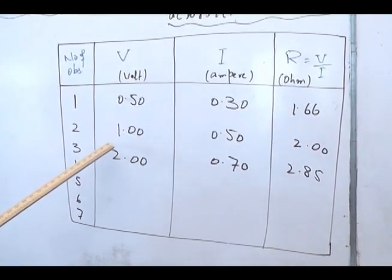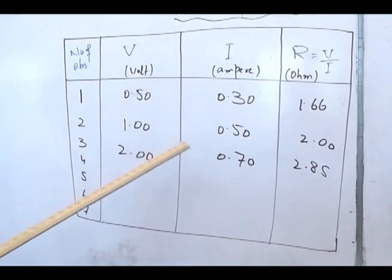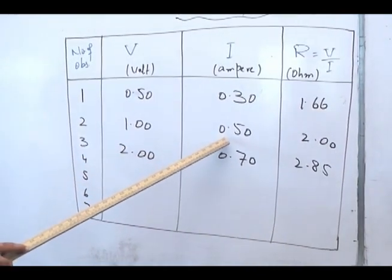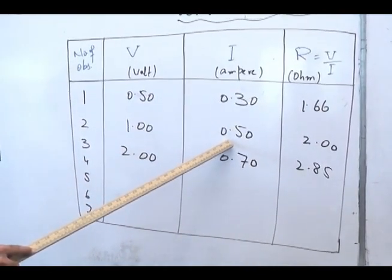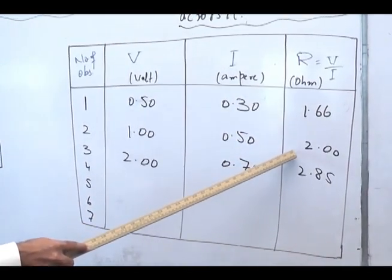Similarly, when we brought the voltage to 1 volt, the current in the ammeter was 0.5 ampere and here the ratio of voltage and current is 2.0.